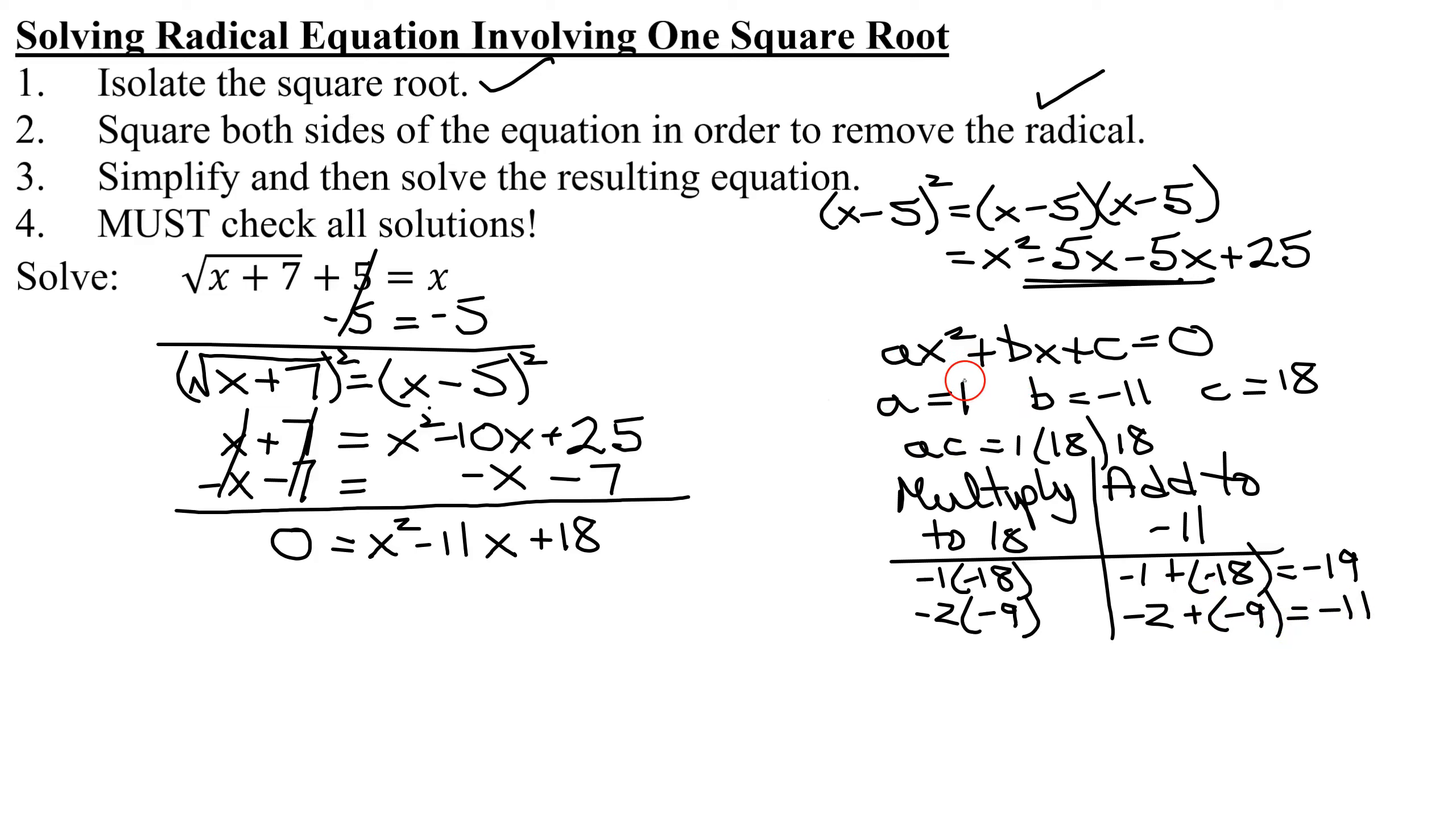And since a was 1, these are my two factors. So I get 0 equals x minus 2 times the quantity x minus 9. So I factored it.